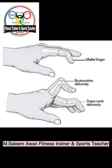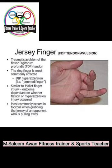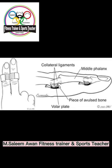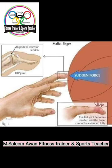Now for some clinical correlations. Bennett's fracture is an oblique intraarticular fracture of the base of the first metacarpal, which may be associated with subluxation or dislocation of the metacarpal. Next is Boxer's fracture, which is a fracture of the neck of the metacarpal — most commonly involving the neck of the fifth metacarpal.